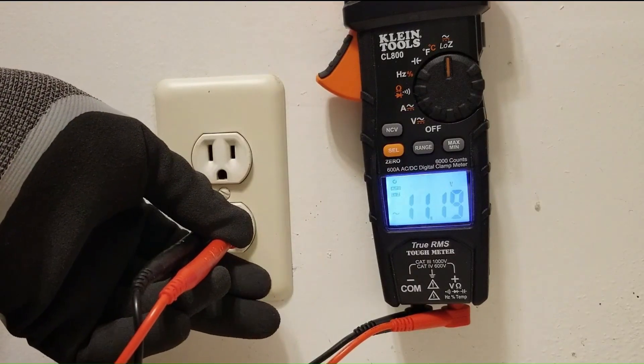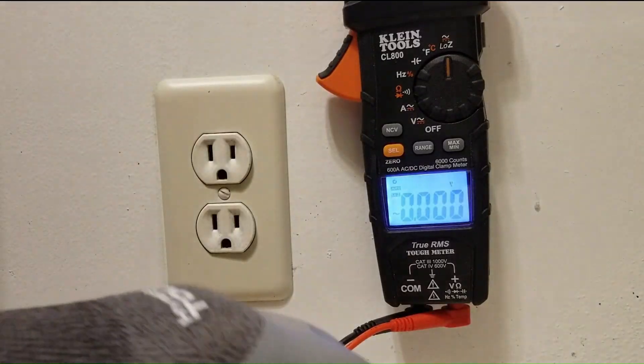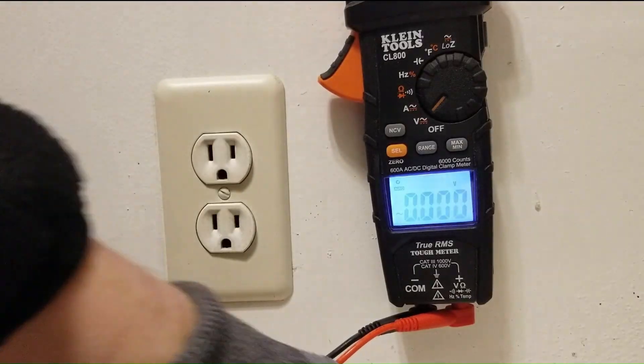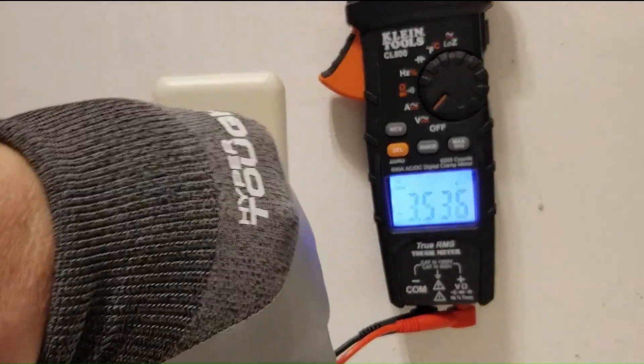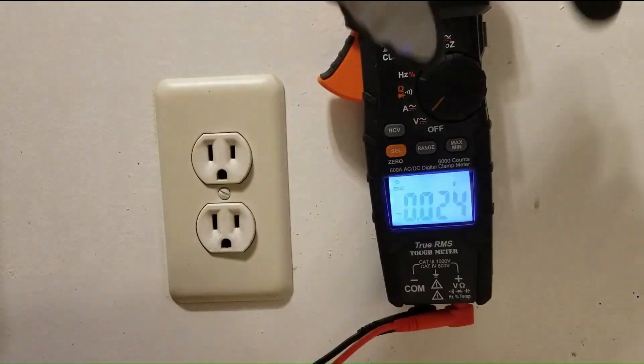So we're using this low Z meter in its low Z mode in combination with its regular mode by plugging the load back in. And that'll tell us that we have a floating neutral. But all we need to know that this outlet is compromised is simply just the low Z mode right there. Low Z tells us we got 11 volts with three kilohm resistance across the outlet. So that's where the beauty of low Z comes in.